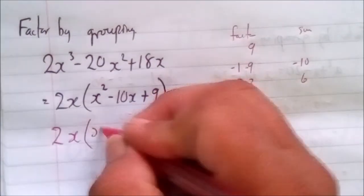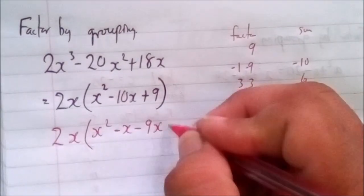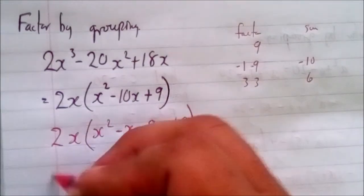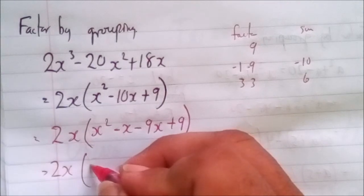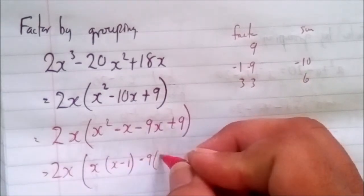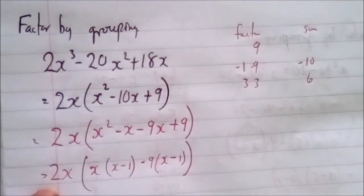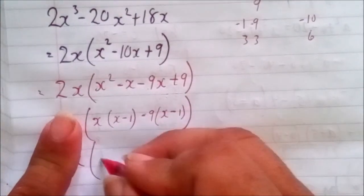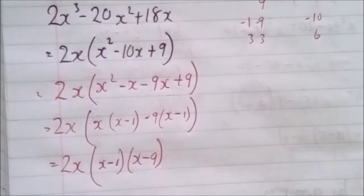We write 2x times the quantity x squared minus x minus 9x plus 9. From the first two terms, we factor out x: x times x minus 1. From the last two terms, we factor out negative 9: negative 9 times x minus 1. Both share x minus 1, so we get 2x times x minus 1 times x minus 9. That's our solution.